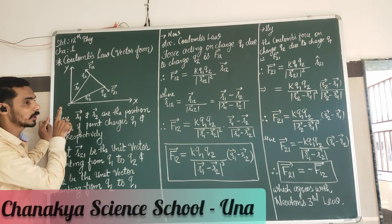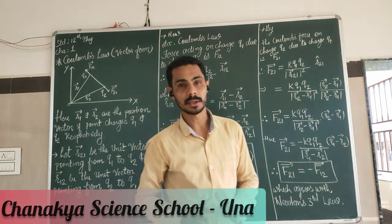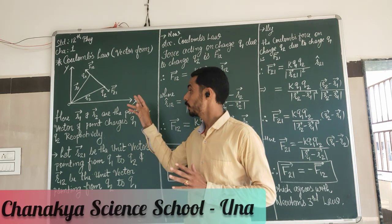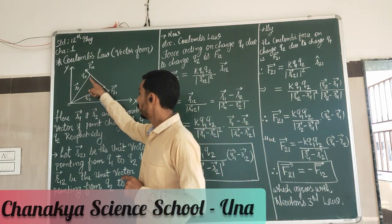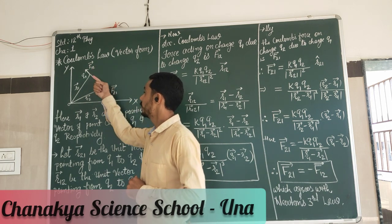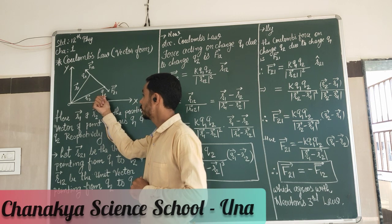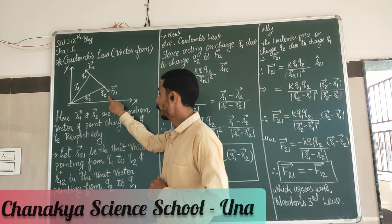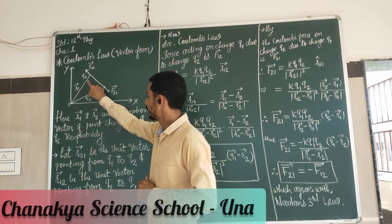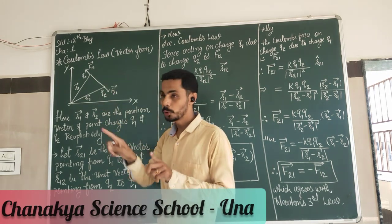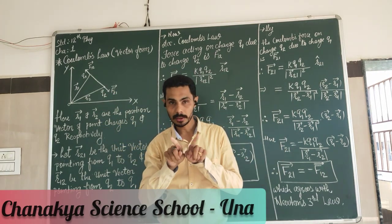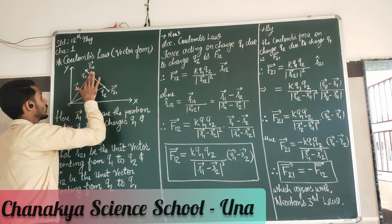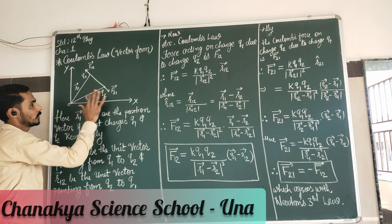My case is: I have taken two charge particles, Q1 and Q2, and these two charge particles are of the same polarity — both positive-positive or both negative-negative. That means both will exert a repulsion force. So Q1 experiences a force due to Q2, and we call this F12.